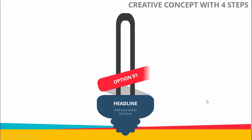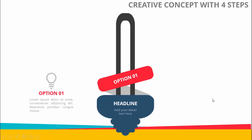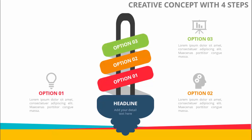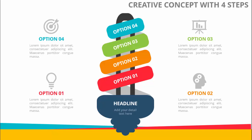When I click we can see here the first option comes — option number one — you can add the icon and the detailed text here. When I click with a different color it will show me option 2, option 3, and option 4. Depending on your requirement you can increase or decrease these options.